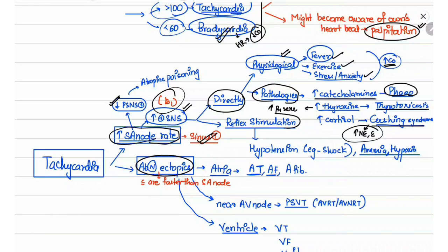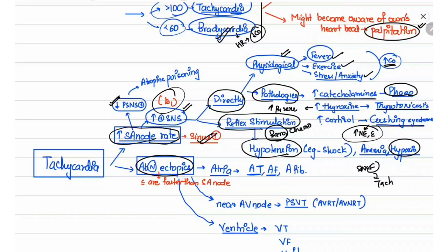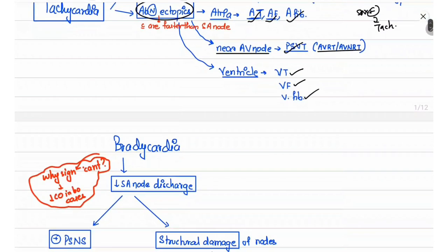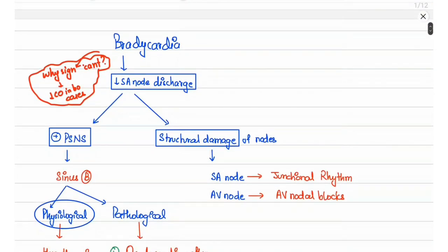Sympathetic nervous system activation can also occur due to reflex stimulation via baroreceptors and chemoreceptors. When baroreceptors are activated, as in hypotension, or chemoreceptors are activated, as in hypoxia, sympathetic activity increases and leads to tachycardia. Regarding ectopic-related tachycardias: if the ectopic is within the atria, it can lead to atrial tachycardia, atrial flutter, or atrial fibrillation. If near the AV node, it leads to AVRT or AVNRT causing PSVT. If within the ventricle, it can cause ventricular tachycardia, ventricular flutter, or ventricular fibrillation.